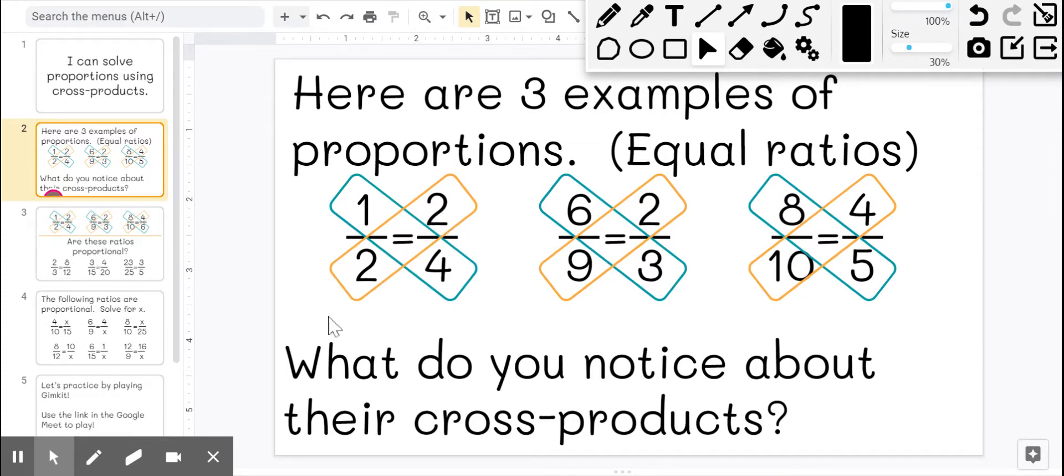If we were to look at the numbers going diagonally, 2 times 2 is 4. 1 times 4 is 4. Is that a coincidence? Let's try another. 9 times 2 is 18. 6 times 3 is also 18.